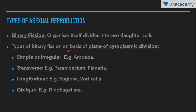Types of binary fission are classified on the basis of the plane of cytoplasmic division. After nuclear division has occurred, the plane by which the cytoplasm divides determines the type. First is simple or irregular, seen in amoeba. Since amoeba is irregular in shape, the plane of cytoplasmic division can be in any direction — that is the simple or irregular type.